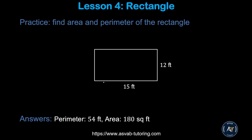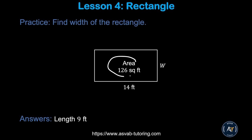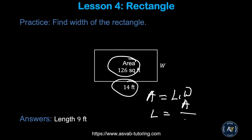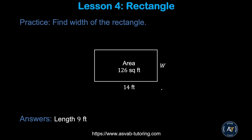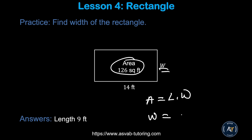Pause the video and try this practice problem by yourself — make sure you get perimeter equal to 54 and area equal to 180 square inches. In the next practice problem, the area is 126 and the length is 14; find the width. Use the formula: width equals area divided by length. Make sure you get 9.